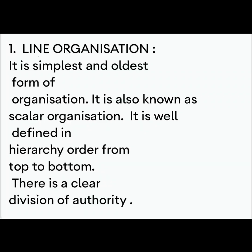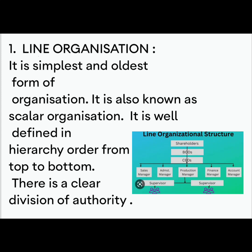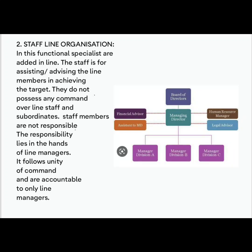First is line organization. It is the simplest and oldest form of organization, also known as scalar organization. It follows a hierarchical order from top to bottom with a clear division of authority, since authority flows from top to bottom. Next is staff line organization — functional specialists are added to the existing line. The staff is for assisting and advising the line members in achieving targets. They do not possess any command over line staff and subordinates. The staff members are not responsible; their responsibility lies in the hands of only line managers.